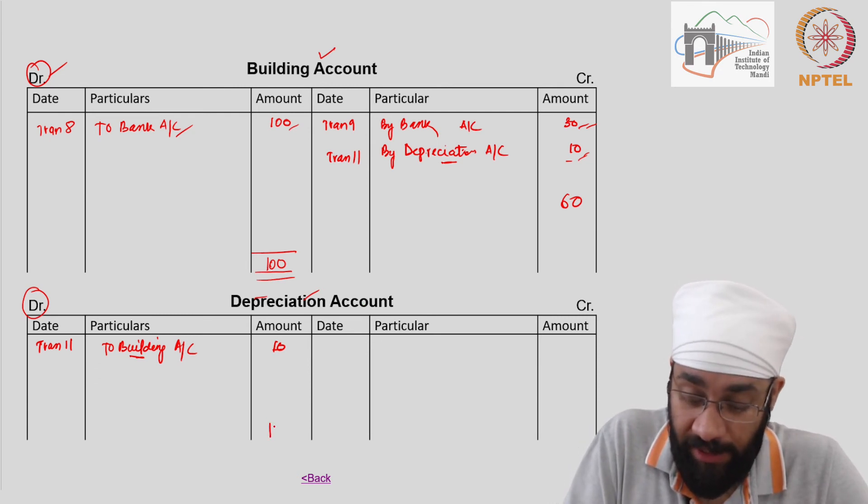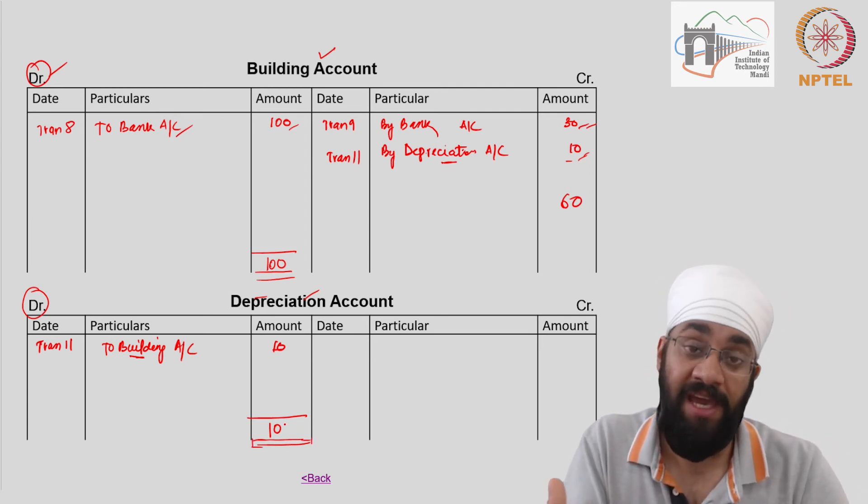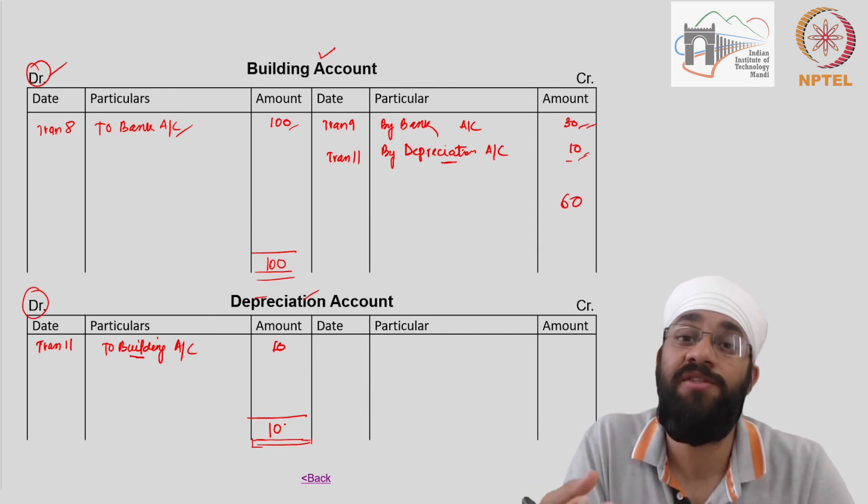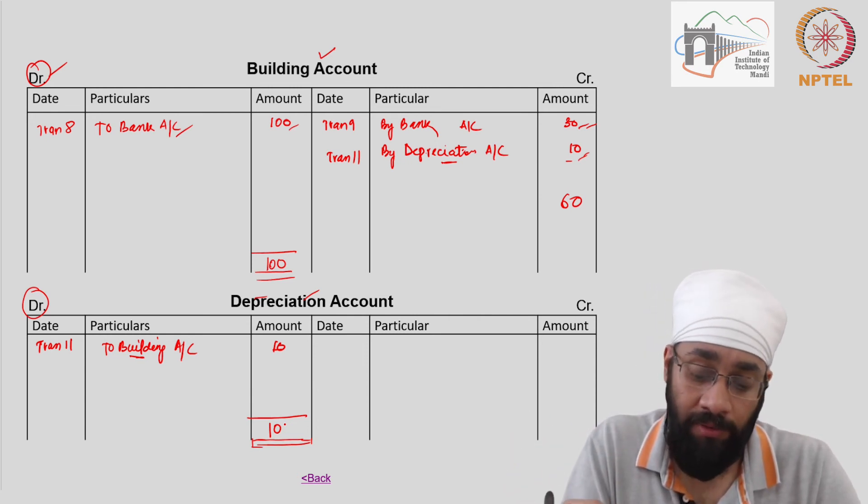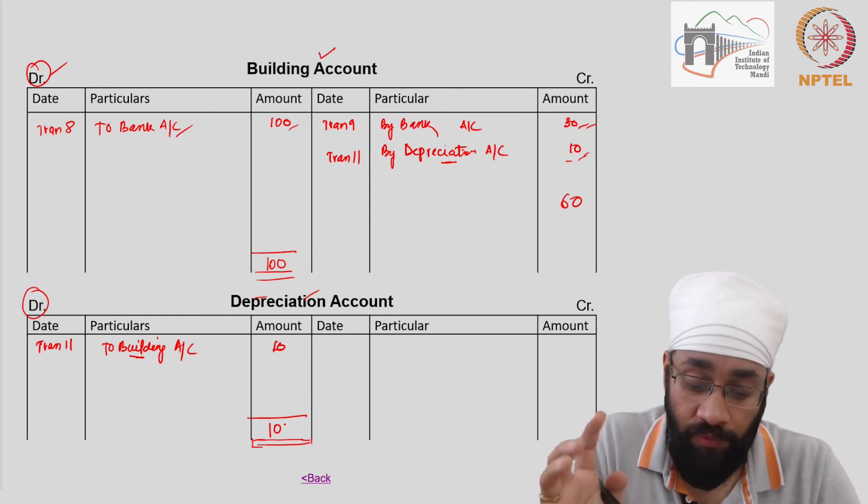Depreciation account tells us that total depreciation which has been charged during the year is 10. When I say charged, I mean this is the expense - you do not pay this to anybody, but you just charge it to your incomes. Out of the income you have to deduct this in order to calculate profit. More on that will be clarified as we move forward.